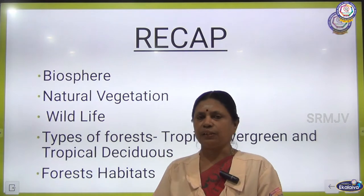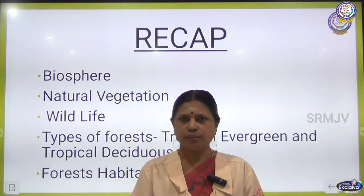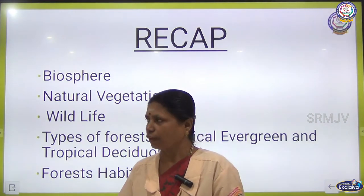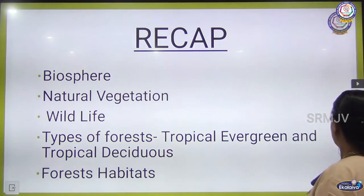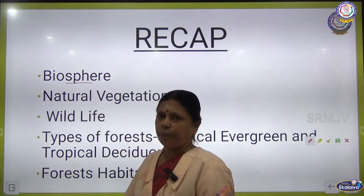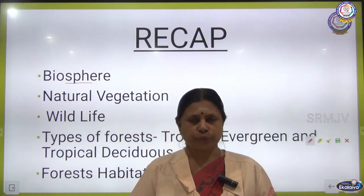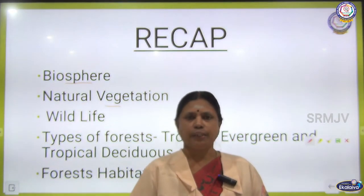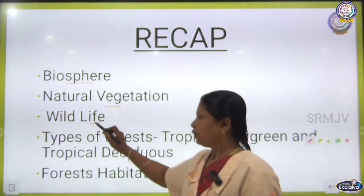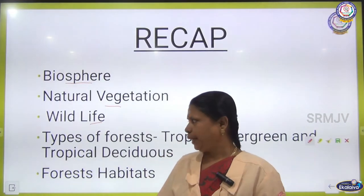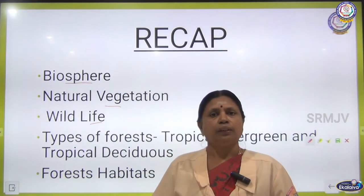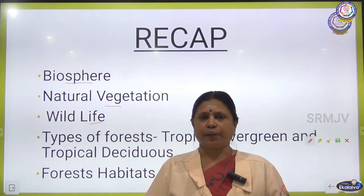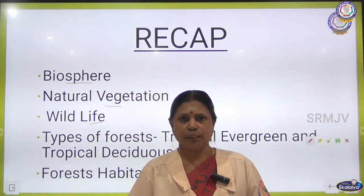In the earlier session we have seen what is biosphere, what is natural vegetation, wildlife, factors responsible for the vegetation, and types of forest. Biosphere is the sum of all ecosystems. All the plants and trees which grow naturally in a region are called natural vegetation. Animals which are not domesticated by humans are called wildlife. Factors responsible for vegetation are temperature, rainfall, altitude, and soil. We have seen tropical deciduous forest and tropical evergreen forest in the previous session.